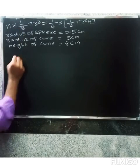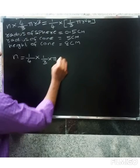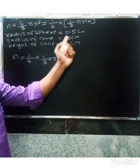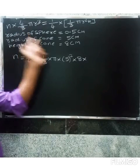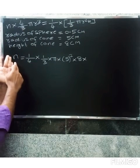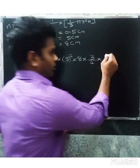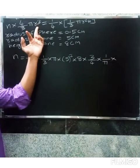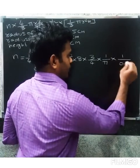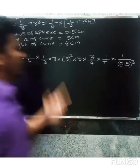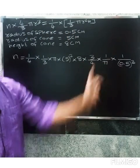So n equals (1/4) × (1/3) × π × 5² × 8, and on the left side we have n × (4/3) × π × (0.5)³. Rearranging: n = [3/(4)] × (1/π) × (1/(0.5)³) × (1/4) × (1/3) × π × 5² × 8.